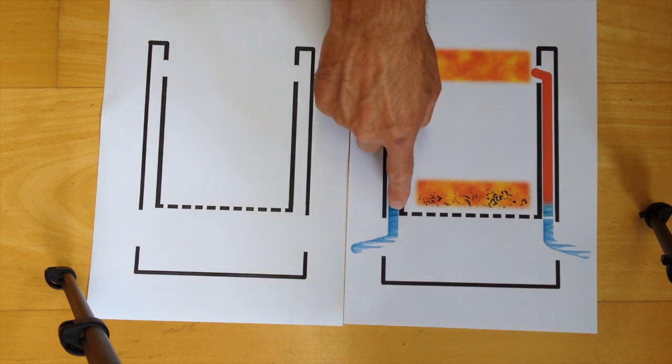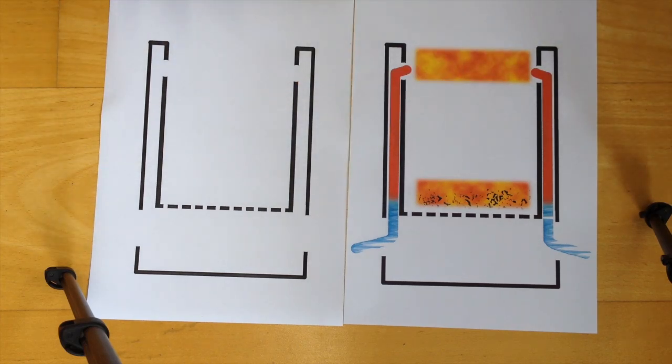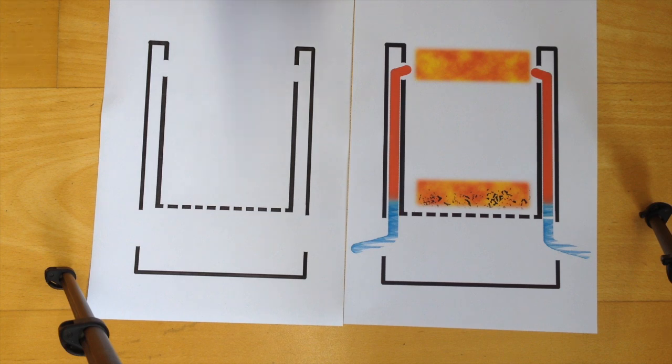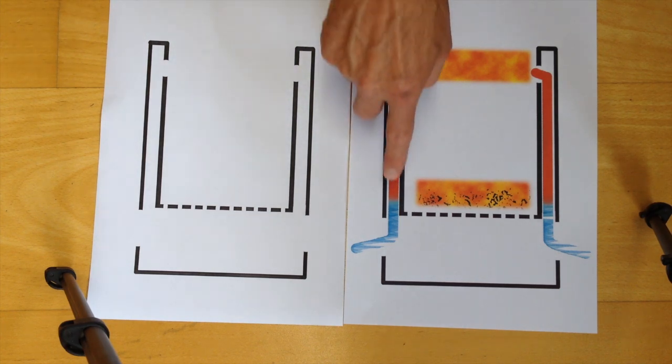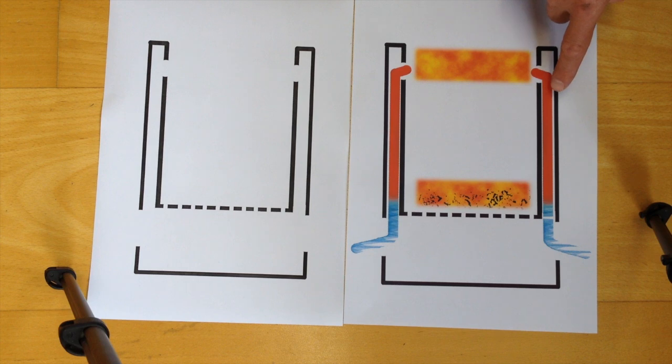So what happens is the hot air is drawn up because it expands and comes out here. Of course, you need some holes here for the air to exit this chamber and to get into the burning chamber.